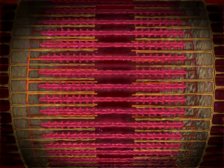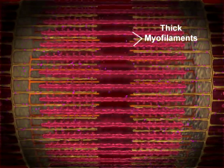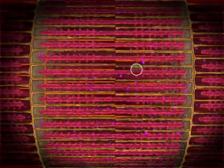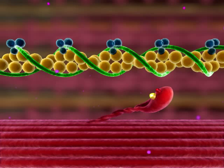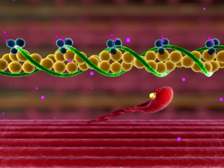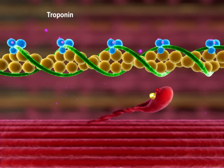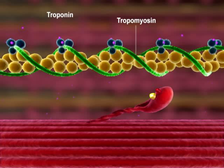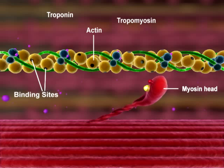A sarcomere shortens when myosin heads in thick myofilaments form crossbridges with actin molecules in thin myofilaments. The formation of a crossbridge is initiated when calcium ions, released from the sarcoplasmic reticulum, bind to troponin. This binding causes troponin to change shape, and tropomyosin moves away from the myosin binding sites on actin, allowing the myosin head to bind actin and form a crossbridge.